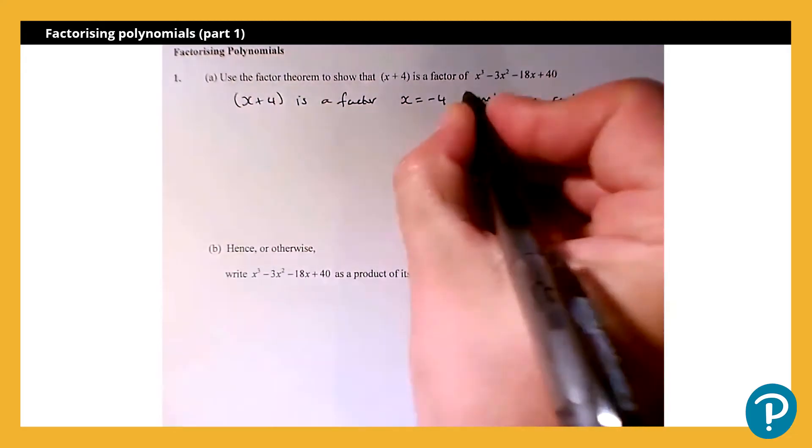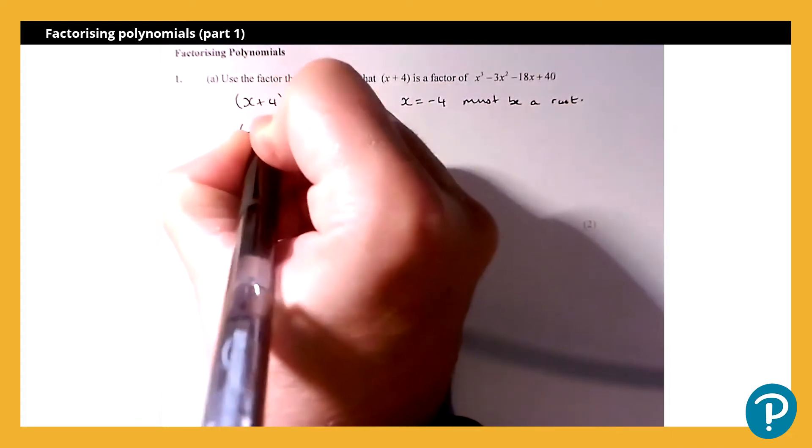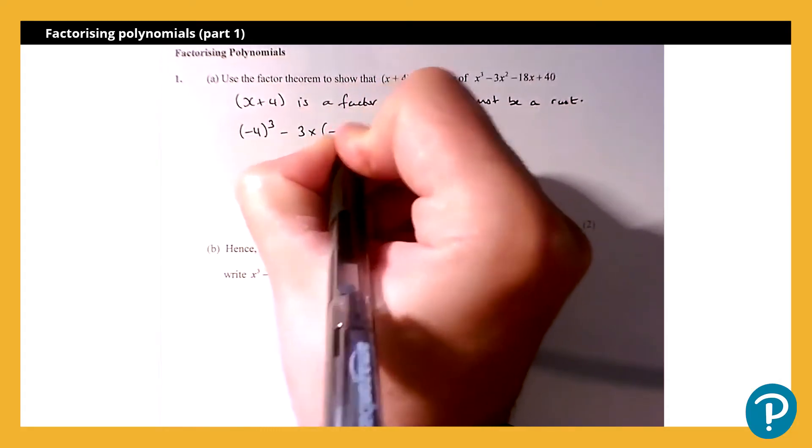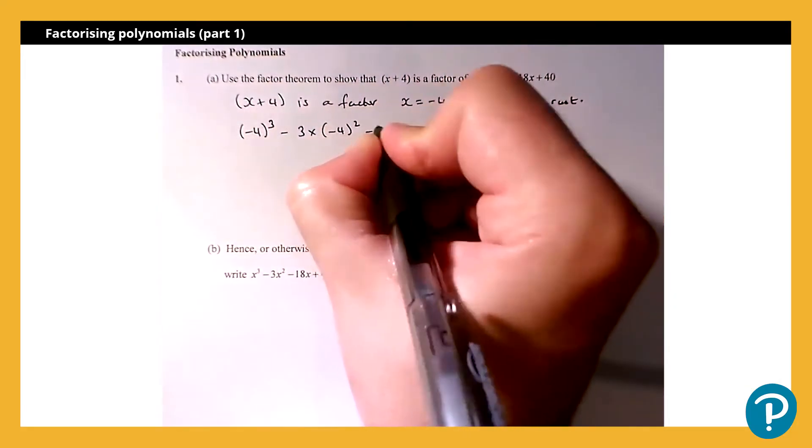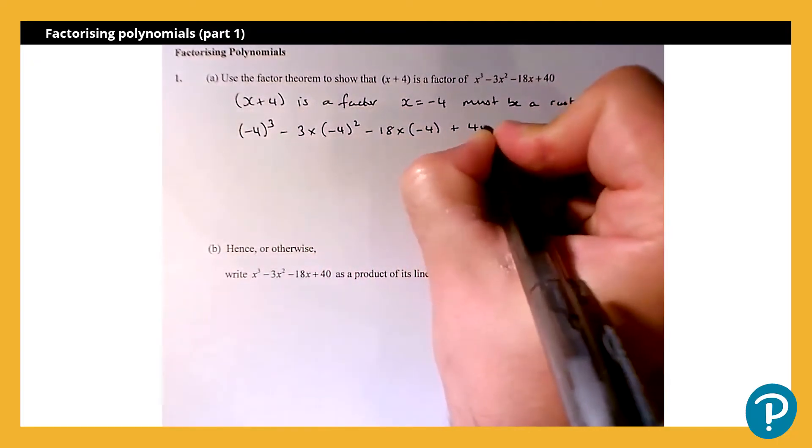Popping in x=-4 into this cubic expression here, we're going to have (-4)³ subtract 3 lots of (-4)² subtract 18 times (-4) and add 40.